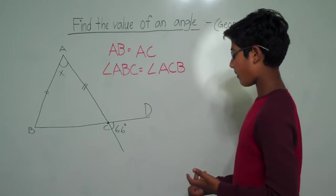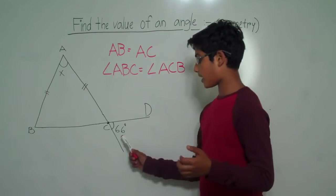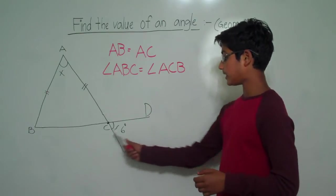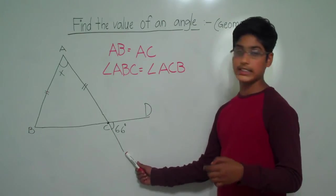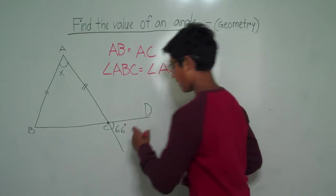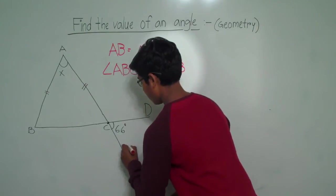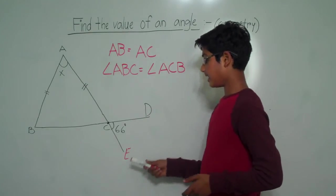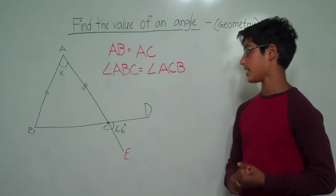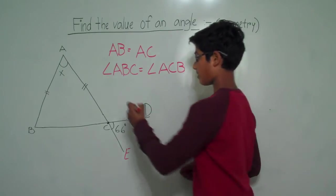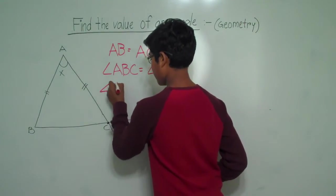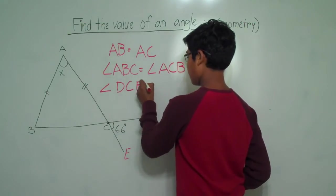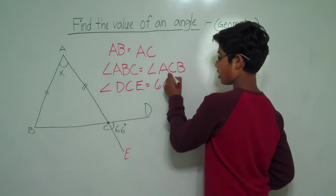Now, we can see in this diagram that there is another angle that measures 66 degrees. So this angle, angle DC — we don't know the name of the other point, so let's label it as point E. So the measurement of angle DCE is 66 degrees. Let's write that down: angle DCE is 66 degrees.